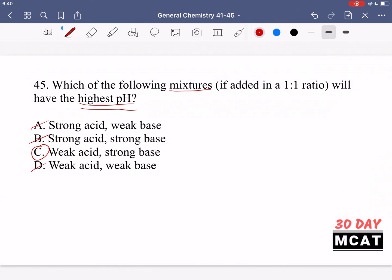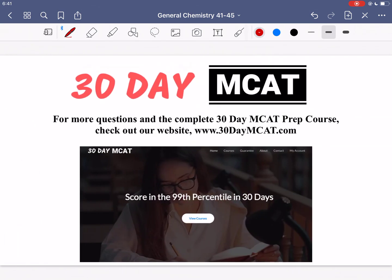D is incorrect weak acid weak base if just like an option B we're assuming they're of similar strength once again they're going to neutralize each other equally it's not going to be more basic or more acidic.